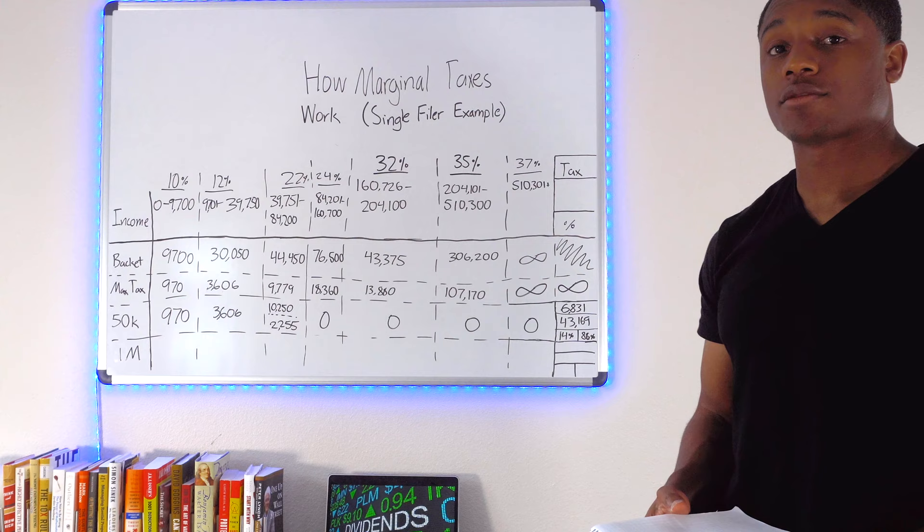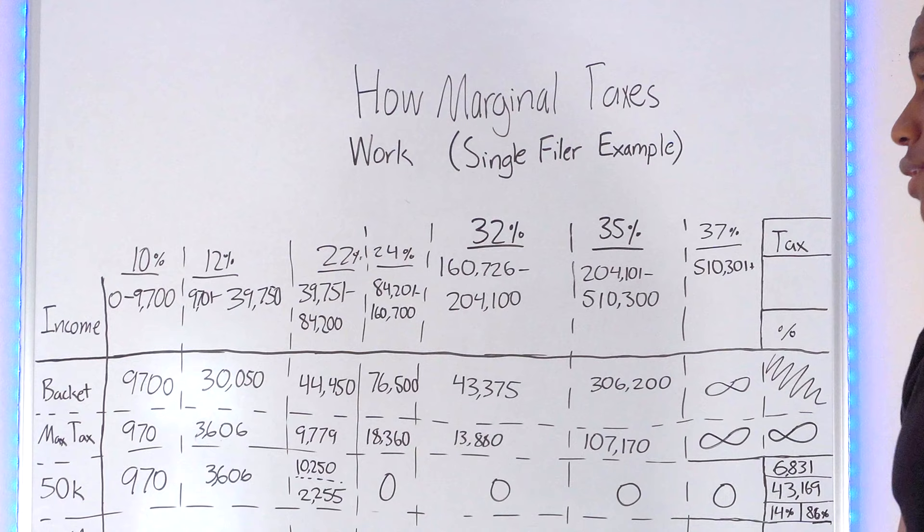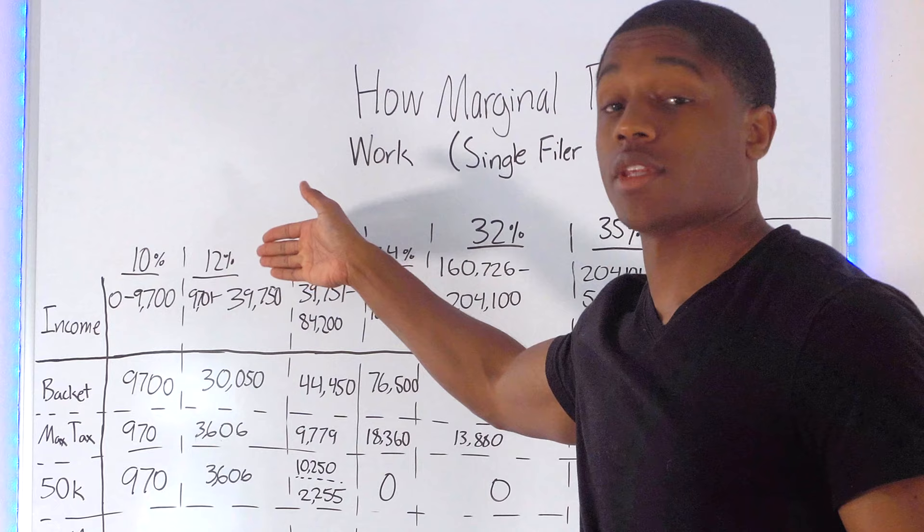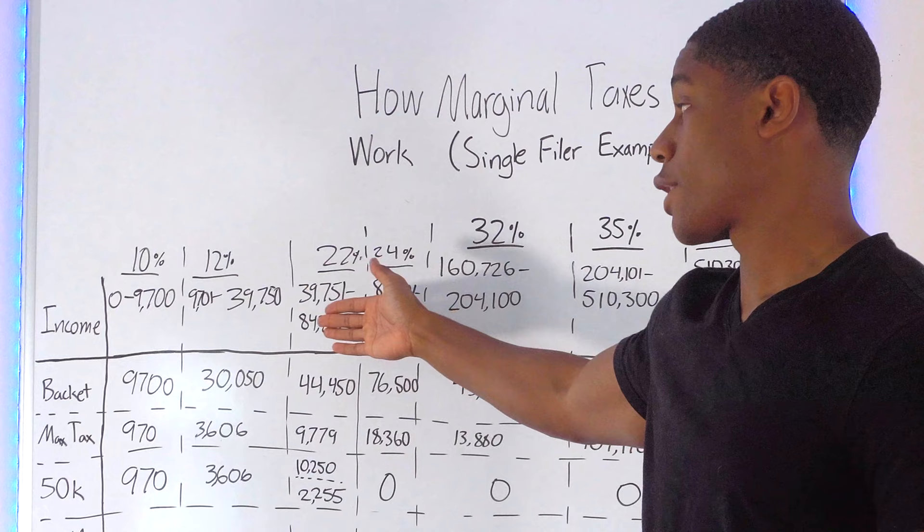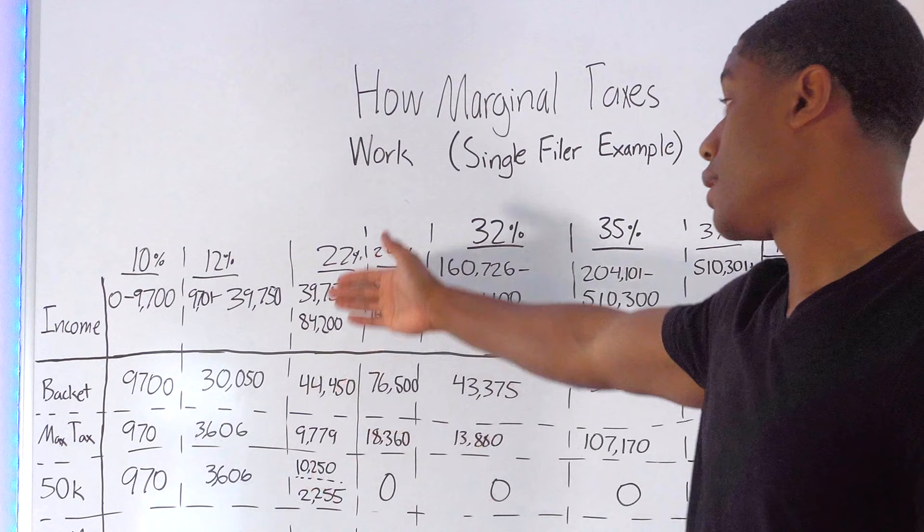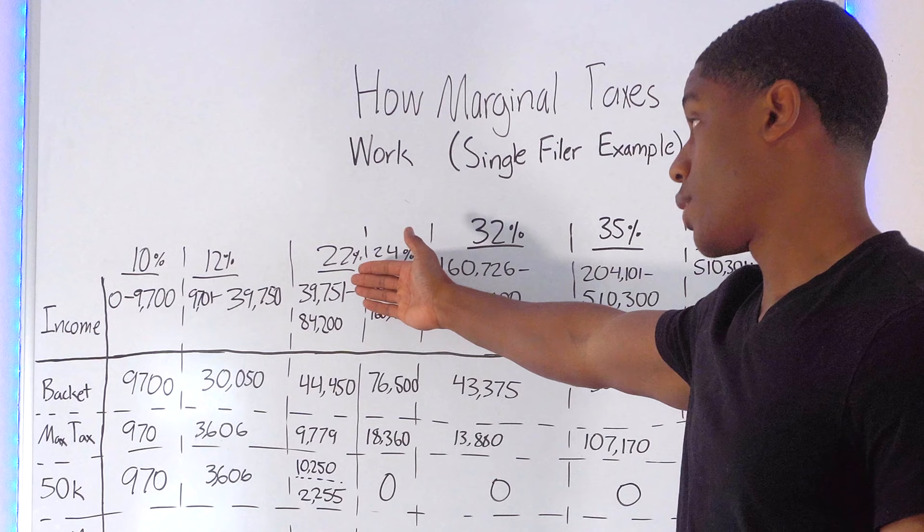Let's get into our 50k example. So we've got this tax bracket over here, they made it above this tax bracket. So they're going to pay all of this, they're going to pay $970. They made it above this tax bracket over here. So they're going to pay $3,606 right here. And then in this tax bracket, they had $10,250. So of that, they're going to pay 22% tax on that, which comes out to $2,255.